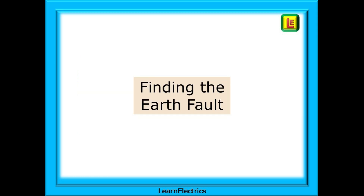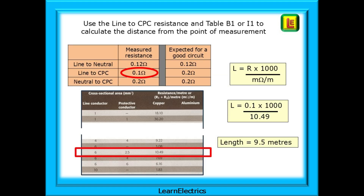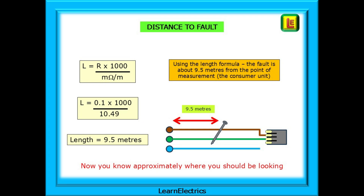Now we can move on to finding the approximate location of the fault. One method is to use the line to CPC resistance and table B1 or I1 to calculate the distance from the point of measurement, which is usually the consumer unit. Use the length formula and input the data into your calculator. With this example the length is calculated at about 9.5 metres from the consumer unit and should now be fairly easy to locate. This method is especially useful in industrial installations where cable runs may be many, many metres in length — it will get you into the right area close to the fault.